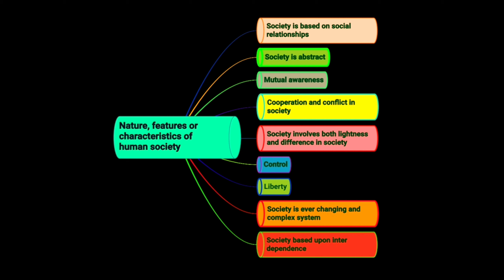Control and liberty coexist in society. Society is an ever-changing and complex system, and it is based upon interdependence.